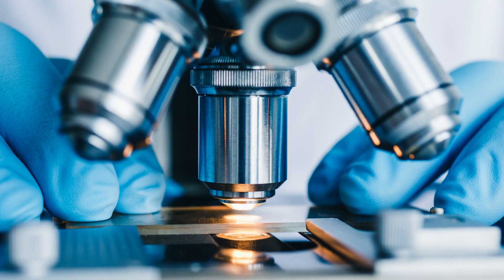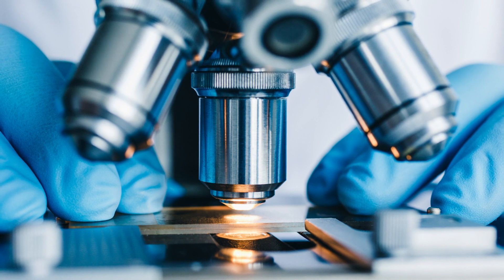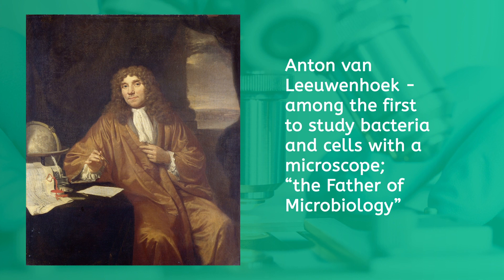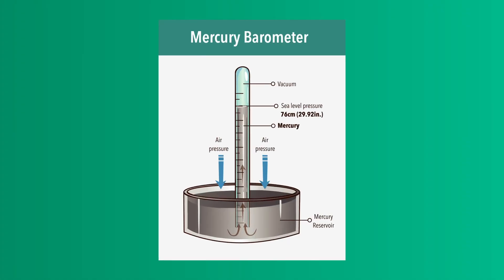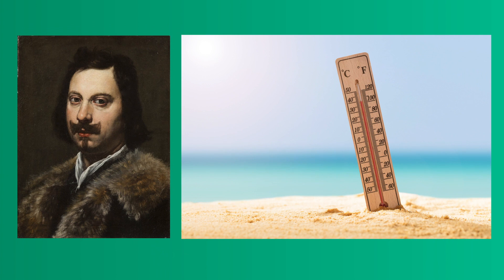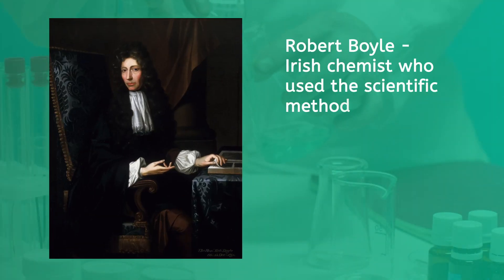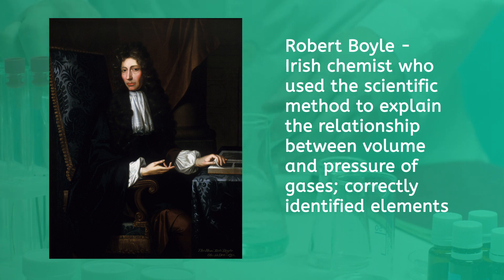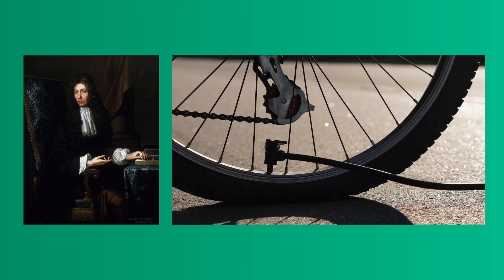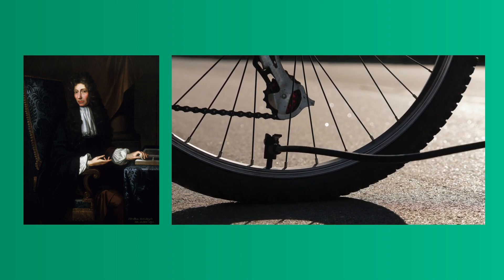The first microscope was created in 1590 by Dutch eyeglass maker Zacharias Janssen. By the 1670s, Dutch scientist Anton van Leeuwenhoek was using microscopes to observe bacteria and red blood cells. The first mercury barometer was developed in 1643 by Galileo student Evangelista Torricelli, and by the early 18th century, mercury was being used in thermometers to measure temperature, pioneered by Gabriel Fahrenheit and Anders Celsius. The first modern chemist was Irishman Robert Boyle. He pioneered the use of the scientific method in chemistry. His 1661 book, The Skeptical Chemist, proposed that matter was made up of smaller primary particles joined together — elements. And Boyle's Law, a mainstay of high school chemistry classes worldwide, explains how volume and pressure of gas affect each other.